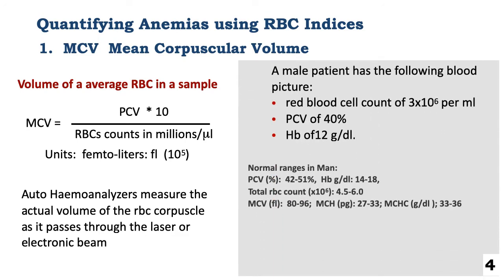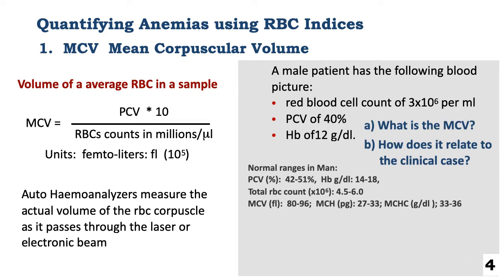Let's look at the lab results of this particular patient, a male. The red blood cell count is 3 × 10⁶, or about 3 million per ml. The PCV is 40%, and the hemoglobin concentration estimated is 12 grams per deciliter. We've given the normal ranges for a hemogram in man below. We want to know the MCV, or the mean corpuscular volume, and how it relates to this clinical case.